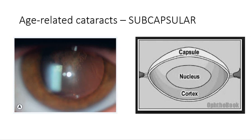Let's have a look first at subcapsular cataracts. On the right-hand side is a schematic diagram of the lens itself, and you can see in the middle we have the nucleus. The nucleus is surrounded by the cortex and then we have the capsule. Be familiar with these locations because it's very important in terms of the location of the cataract.